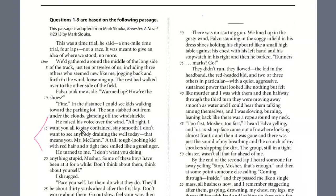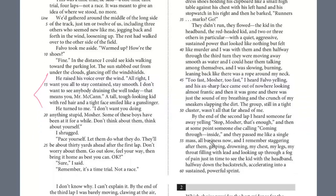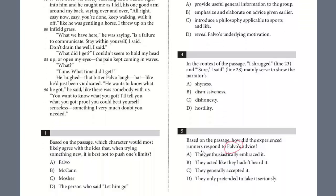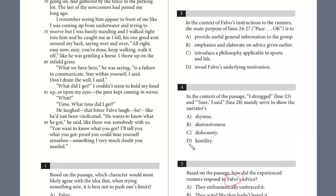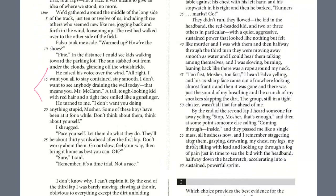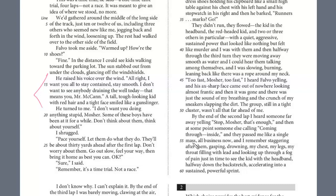Falvo says, I want you to stay contained, stay smooth. I don't want to see anyone draining the well, and that means you, McCann. And then he reinforces the advice to Mosier, the warning. There's no verbal response here. So this is a little bit more implicit. We're looking for evidence how the experienced runners responded. If they didn't say anything, we have to look at their actions. So let's take a look at the experienced runners' actions, specifically how they ran the race. Once the race started...